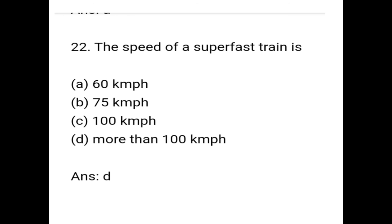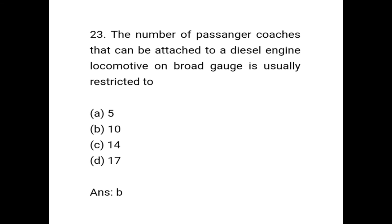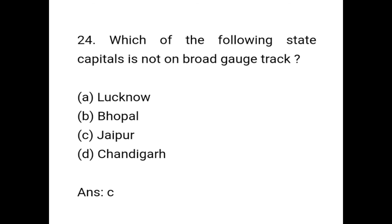The speed of super fast trains is — correct answer is option D: More than 100 kmph. The number of passenger coaches that can be attached to a diesel engine locomotive on broad gauge is usually restricted to — correct answer is option B: 10. Question 24: Which of the following state capitals is not on broad gauge track? Correct answer is option C: Jaipur.